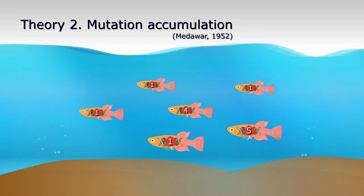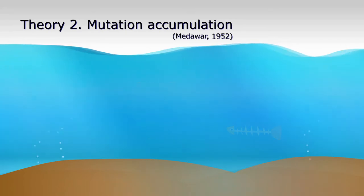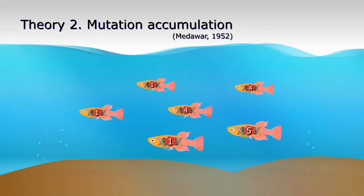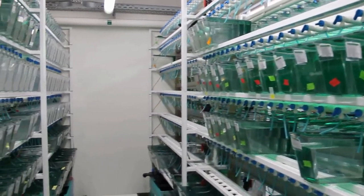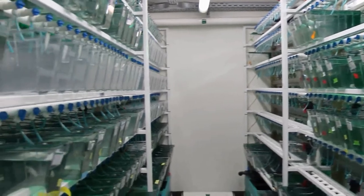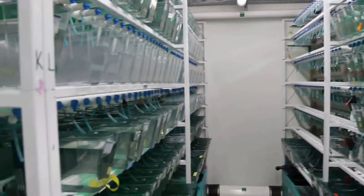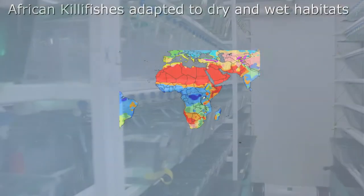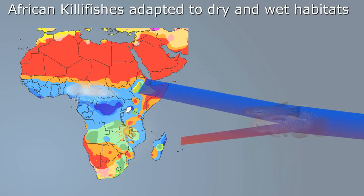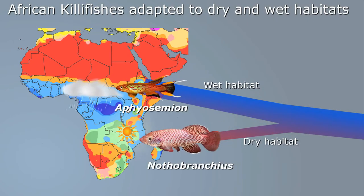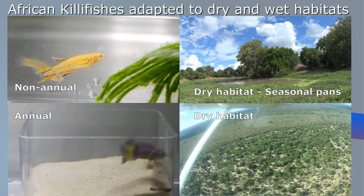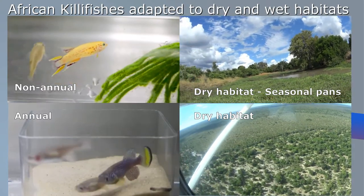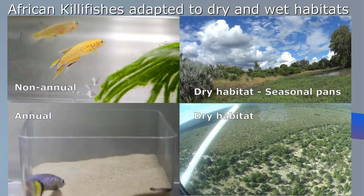Our group uses African killifish as a model to study the evolution of gene mutations that limit lifespan and contribute to aging. Different killifish species evolved short lifespans independently. While some species of killifish come from regions with year-round water availability, others became specialized to live in very dry regions where water is present only during the rainy season.